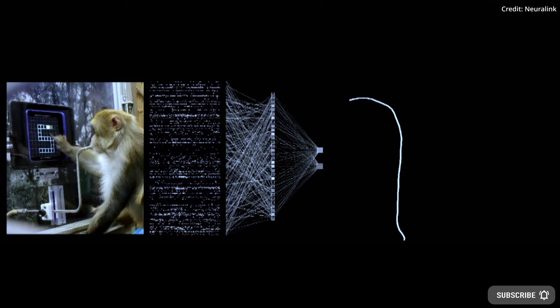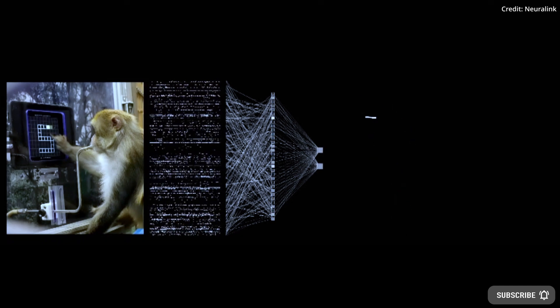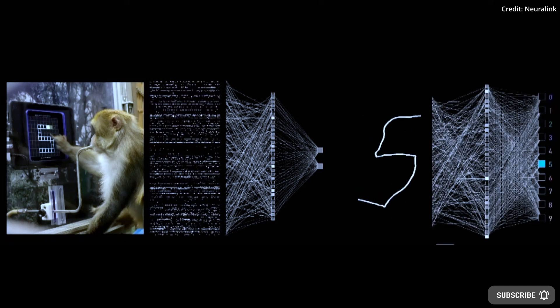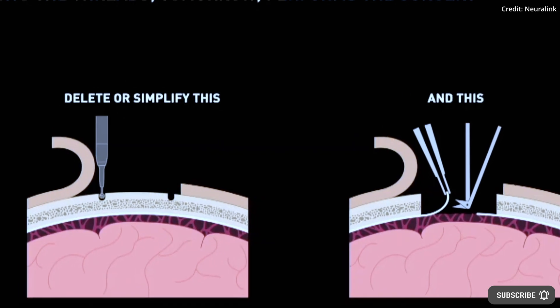Neuralink is currently creating a high-bandwidth generalized interface to the human brain, which requires safety, scalability, and access to various brain regions.